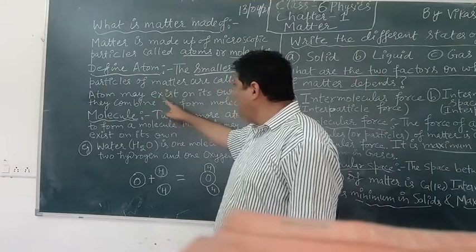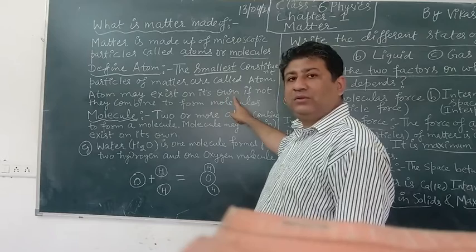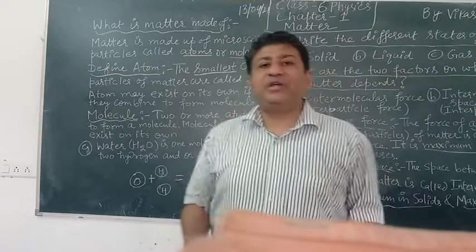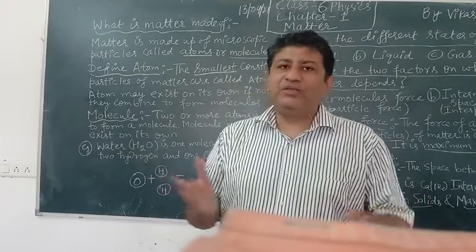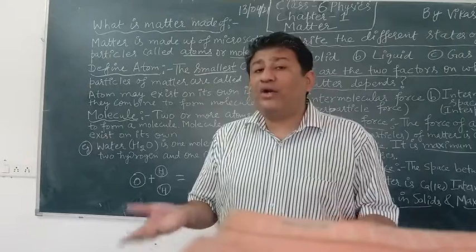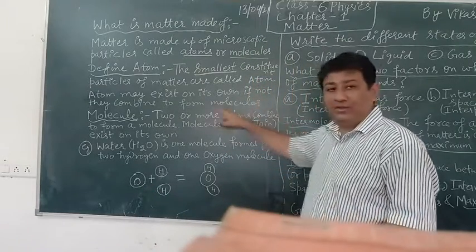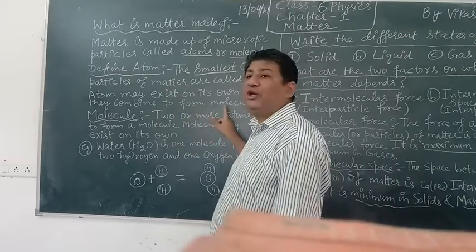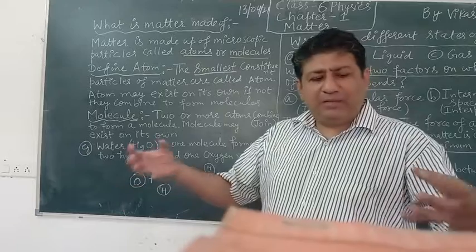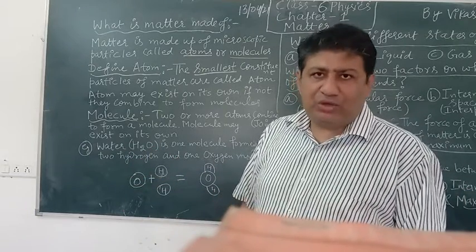Now atom may exist on its own or may not. Atom jho hotte hai, these are very reactive. You would study in chemistry. So they may exist on its own, atom matlab individually, or they combine to form molecules. As I told you earlier also, ki atom jho hai combine karke molecule bada hata hai.